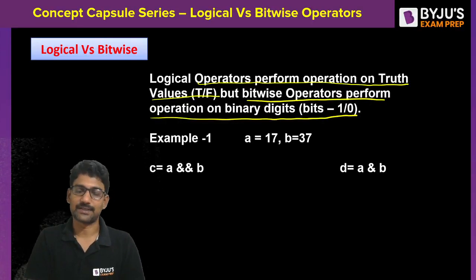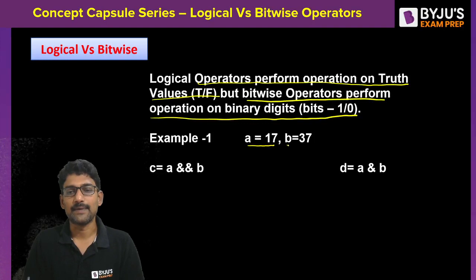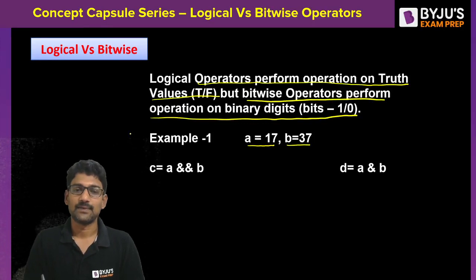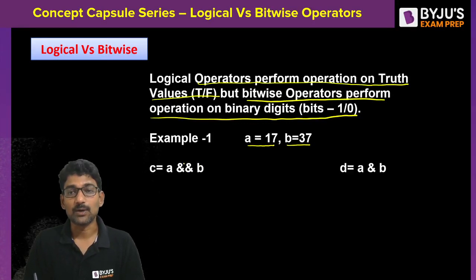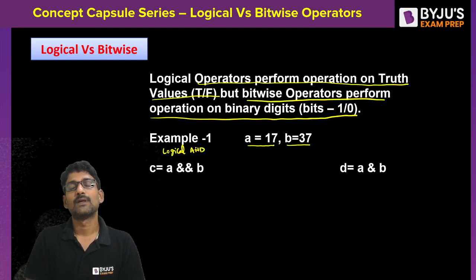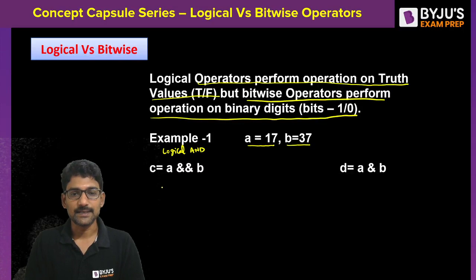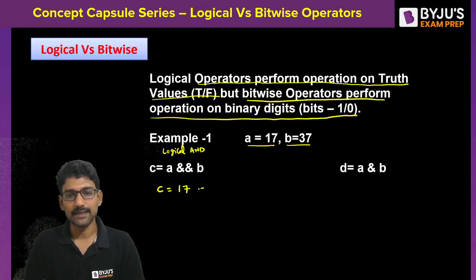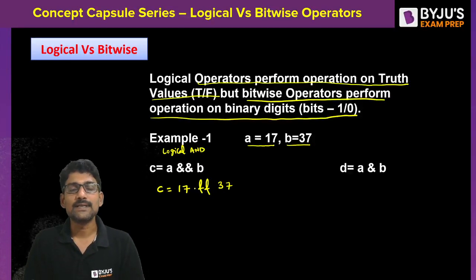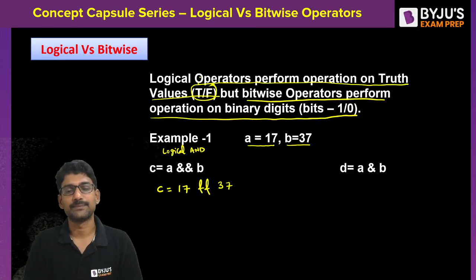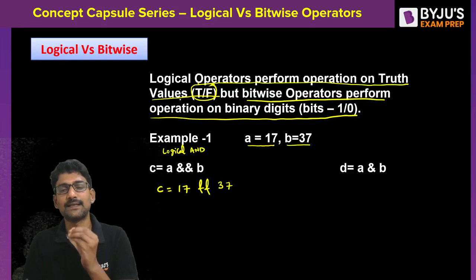Let us see an example. Suppose a = 17 and b = 37. Then c = a logical-AND b — that means c = 17 logical-AND 37. Since this is a logical operator, it takes only truth values as input.